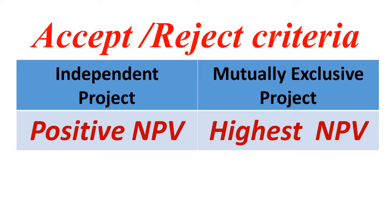In the case of mutually exclusive projects, two projects will compete with each other. In such a case, which project is to be selected? We have to decide based on which project gives the highest NPV — that project will be selected. This is the basic criteria for the accept and reject rule.